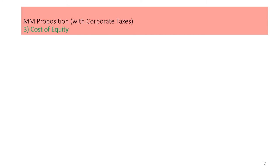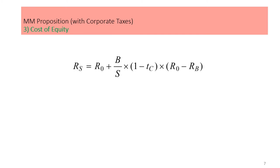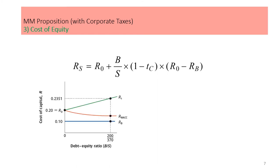Now let's learn how to calculate the cost of equity. Recall that MM Proposition 2 in a world without taxes shows a positive relationship between the cost of equity and leverage, because the risk of equity increases with leverage. The same intuition also holds in a world with corporate taxes. Here is the formula to calculate the cost of equity with corporate taxes included. This formula represents the equation of a straight line with intercept R0 when debt is zero. Financial leverage adds risk to the firm's equity, so as compensation, the cost of equity rises with leverage.